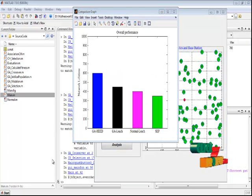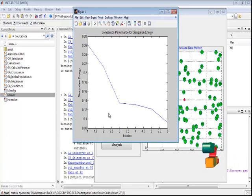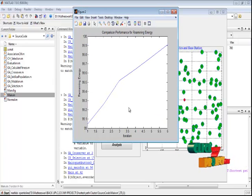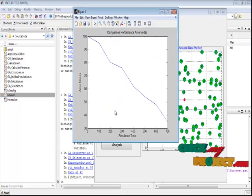This is the comparison performance of dissipation energy which should be decreased. I plot the graph between iteration and also the dissipation energy. Now this is the comparison performance of remaining energy. It should be increased. I plot the graph between iteration and also the remaining energy.